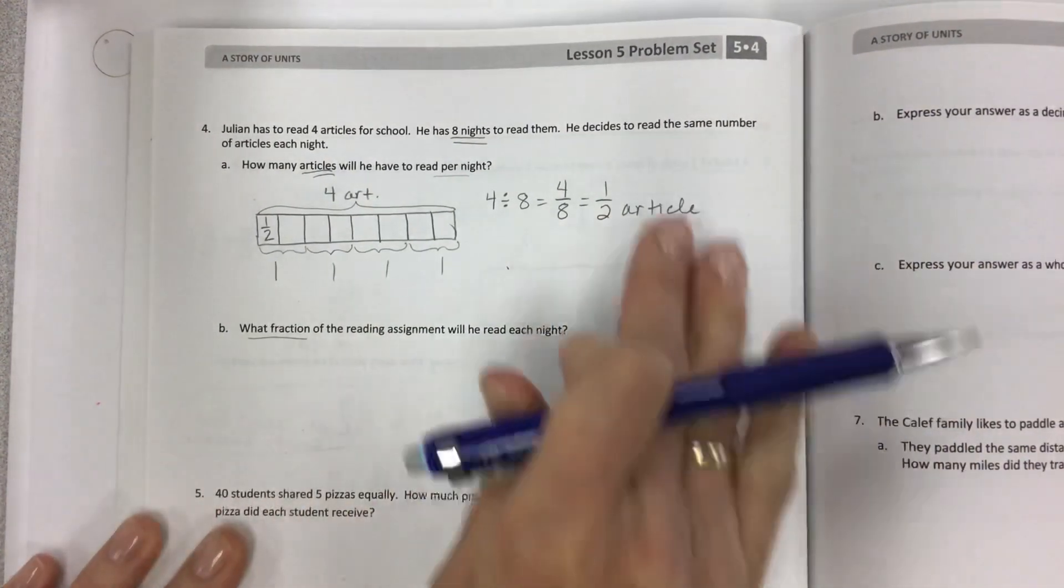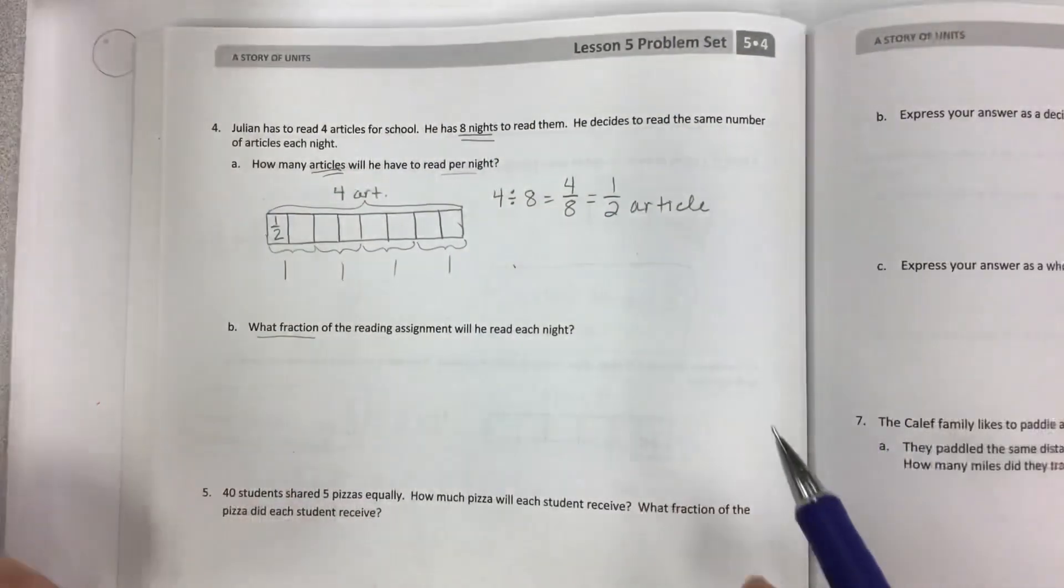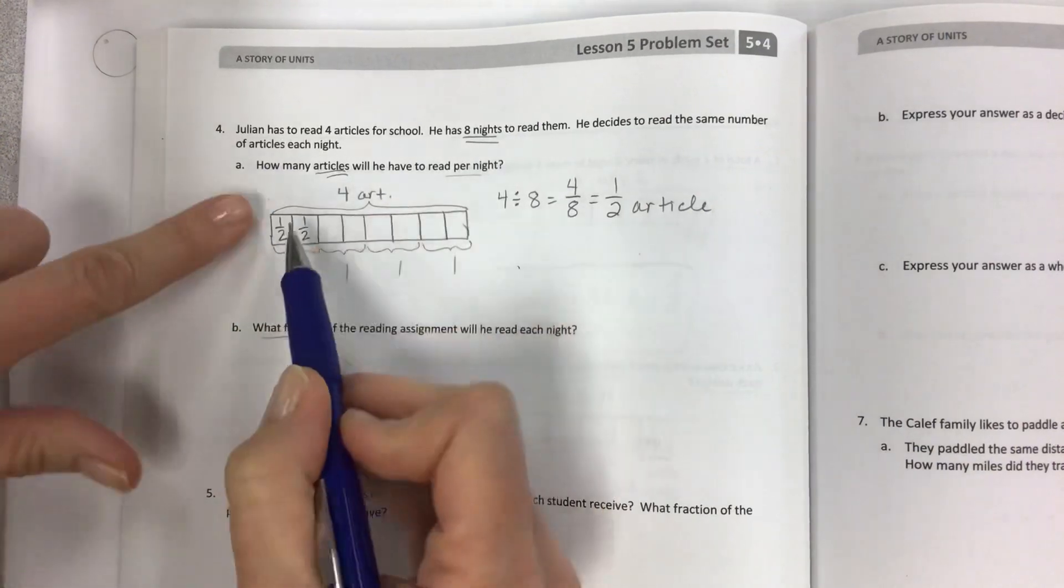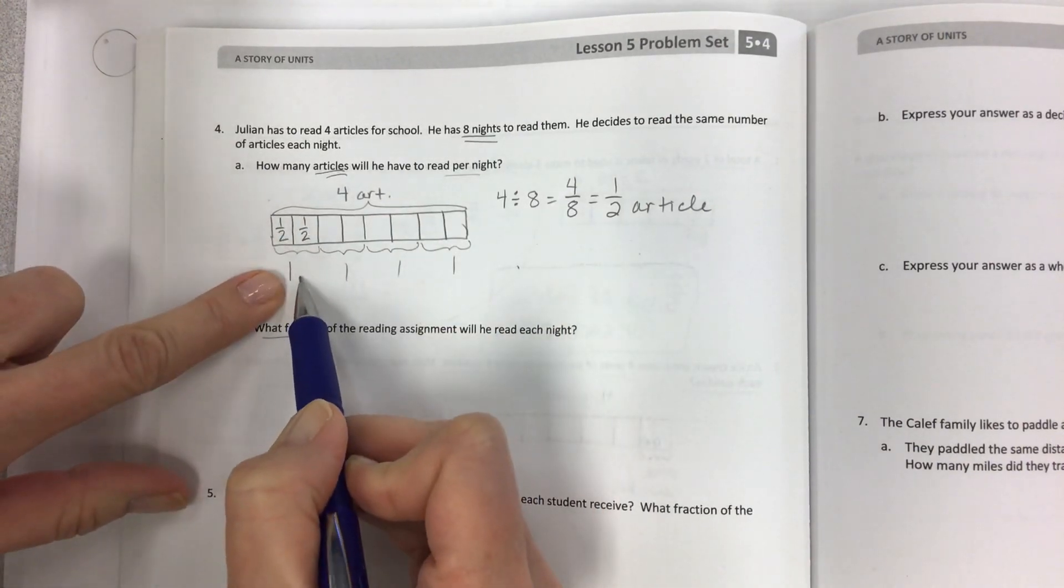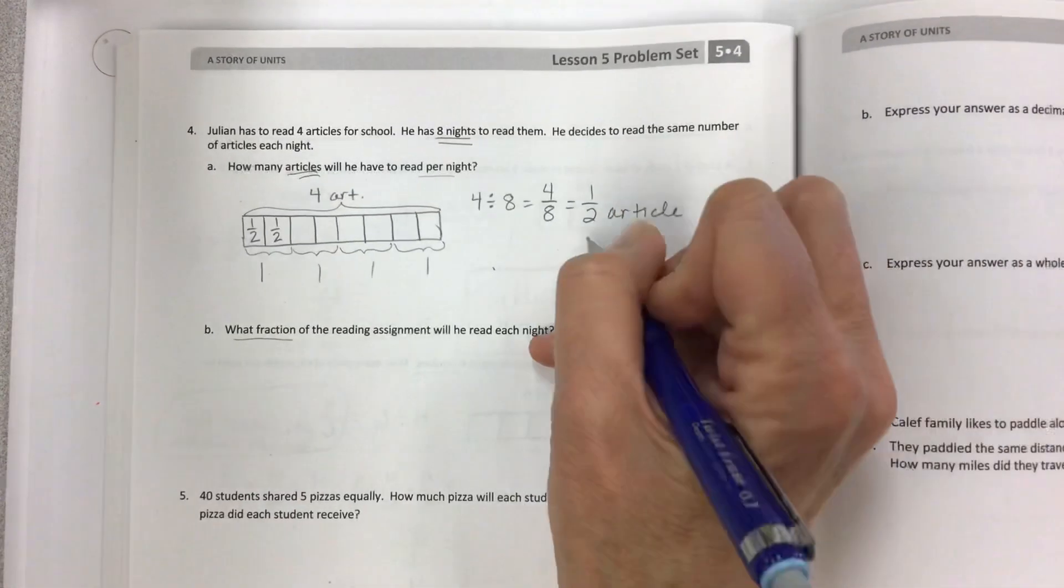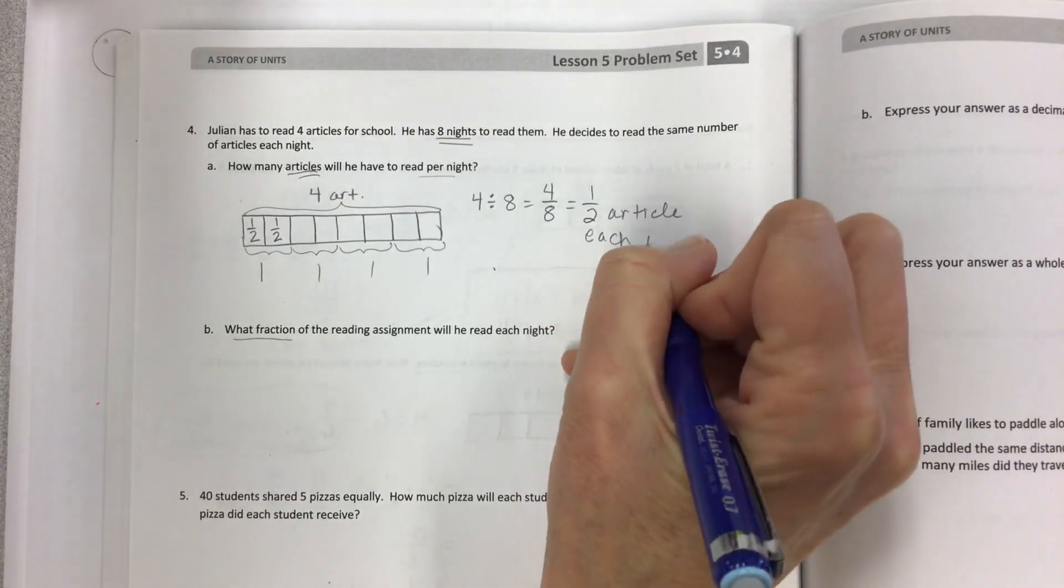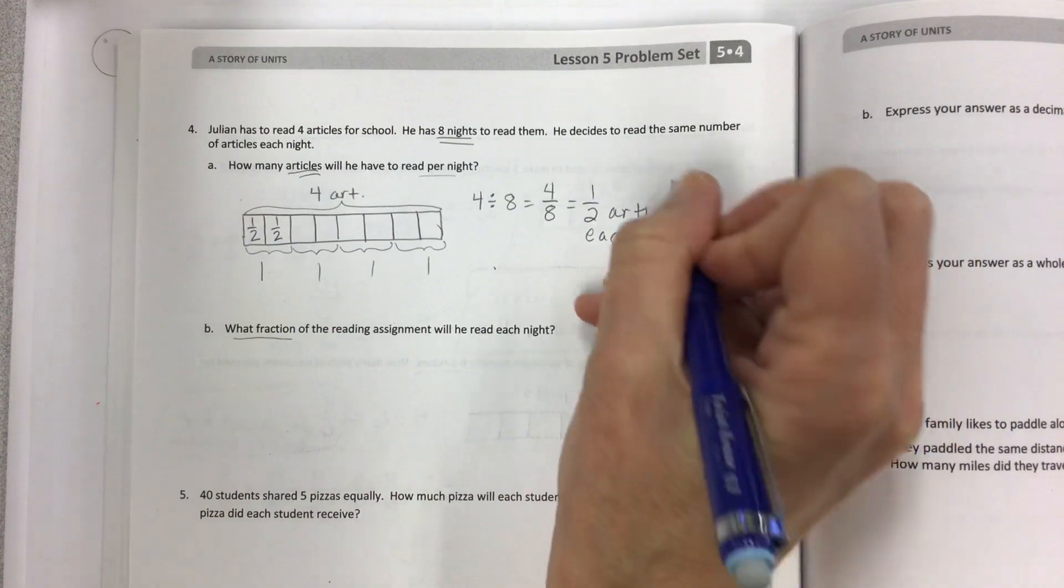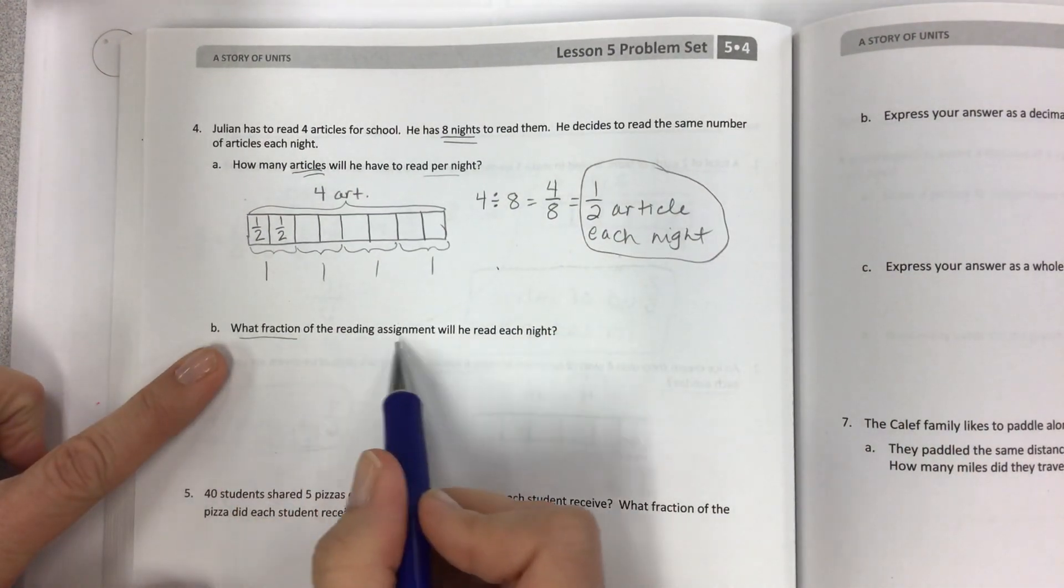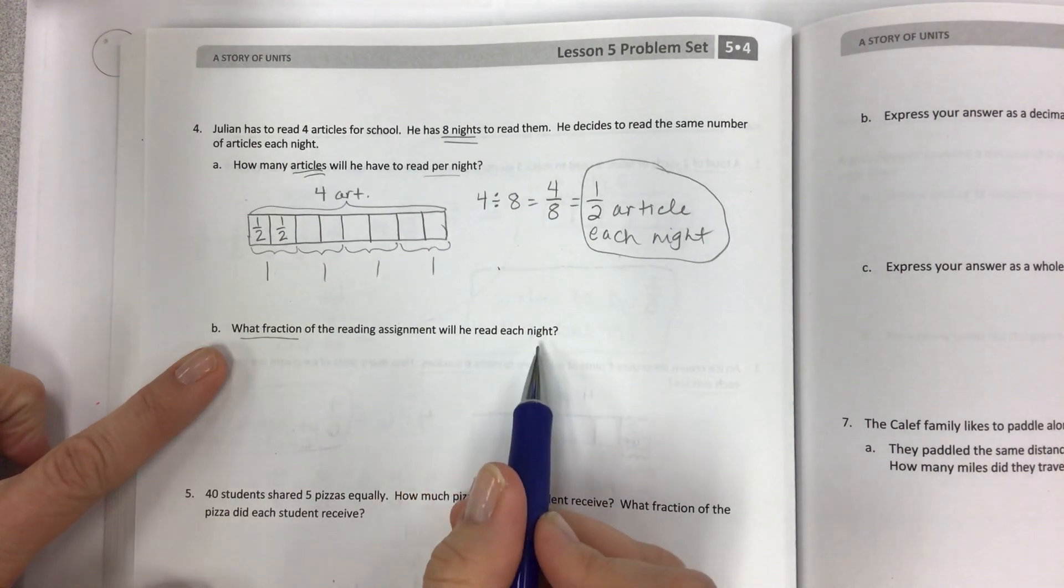Half an article. Now, I'm not going to check all of these problems. We're going to go forward because you can see how these would correctly add up. Half plus half equals one. This is one article, two, three, four. There you go. So half an article each night.